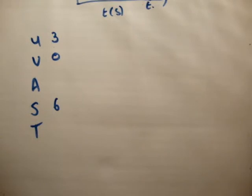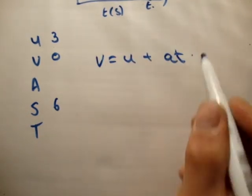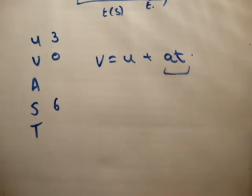the final velocity is 0, and the distance covered is 6. So, if we use v is equal to u plus at, will that be any good to us? The answer is no, because we have two variables, a and t, which are unknown.